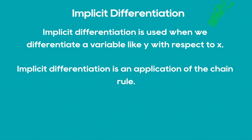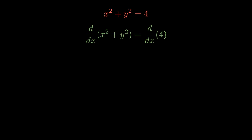Now let's do implicit differentiation, which is used when we want to differentiate a variable like y with respect to x. Implicit differentiation is an application of the chain rule. For example, given x²+y²=4, differentiating with respect to x: the derivative of x² is 2x, and the derivative of y² is 2y times dy/dx, and this equals 0. Solving for dy/dx gives negative x over y. Check my book for how implicit differentiation relates to the chain rule.